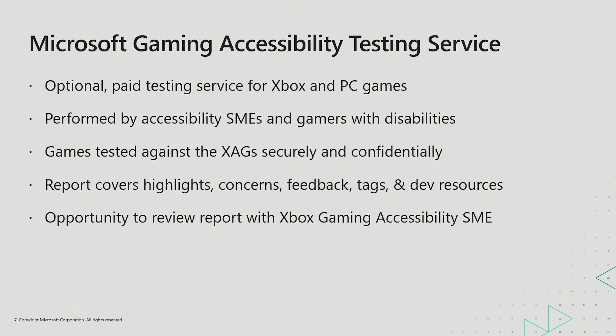About seven days after submission, a report is generated by the team that covers five key areas: game accessibility highlights showing what the game is already doing well; concerns that indicate areas where the game fails to meet Xbox Accessibility Guidelines; free-form gaming and disability community feedback from gamers with disabilities; and a list of all the accessibility feature tags that the game qualifies for and which ones they could qualify for with minor tweaks. We also include over two pages of various accessibility resources to help devs make their products more accessible. Once the report is received, every developer can review it with a subject matter expert from the Microsoft Gaming Accessibility Team to answer any questions or concerns.